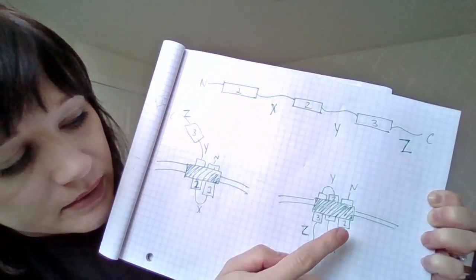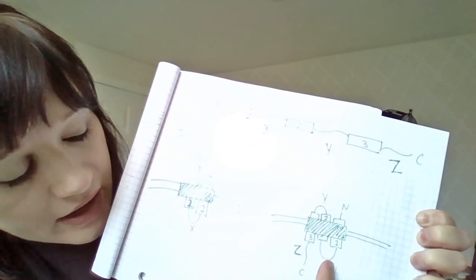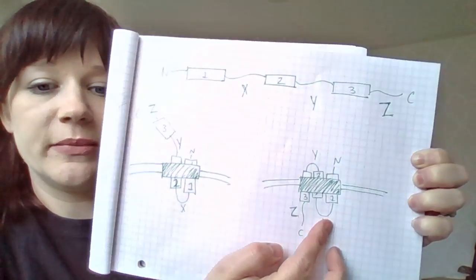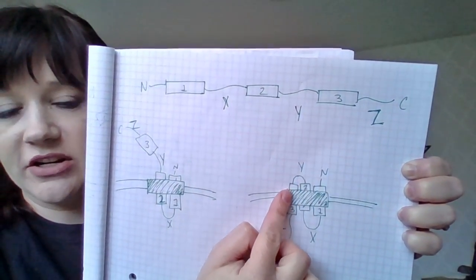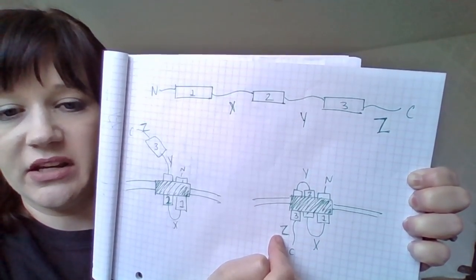So we have one, two, and three. We've got the X region inside the lumen, and we've got the Y region in the cytosol. And then the Z region is back into the lumen of the ER again.